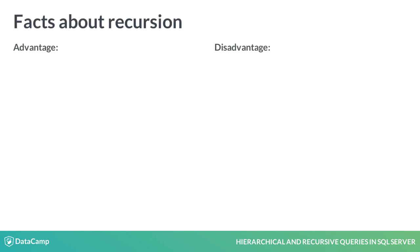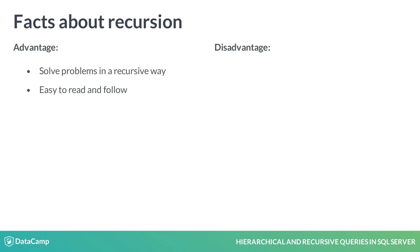Knowing how recursion works in general, we are now summarizing facts about recursion. There are several advantages. You can solve problems recursively if the problem can be reduced to smaller problems of the same type. A recursively solved problem is easy to read and to follow, and the termination condition could be used to limit the number of iterations.